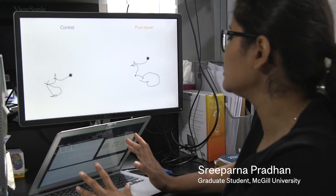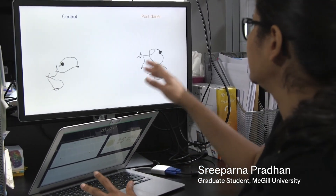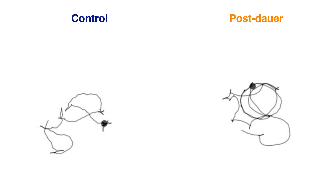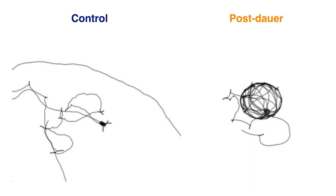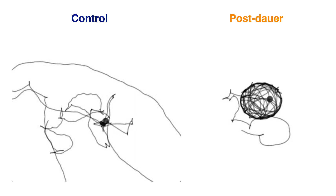Here you can see two single animals — the control animal and the post-dauer animal — exploring a patch of food at the center of the plate. You can see the post-dauer animal stays mostly on this patch of food whereas the control animal goes to explore more area through this one-hour time period. The control animal has gone off the lawn and is exploring, whereas the post-dauer animal stays mostly on the lawn, reverses a lot at the lawn borders, and when it does leave the lawn it doesn't explore as much area.